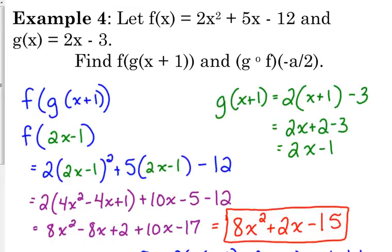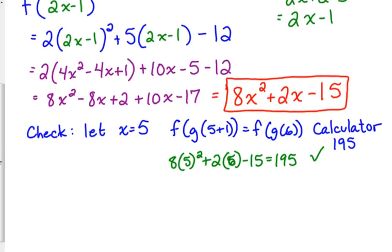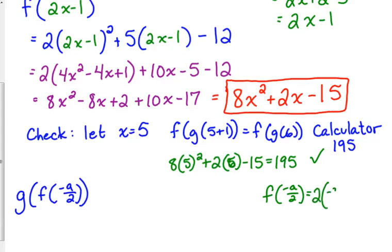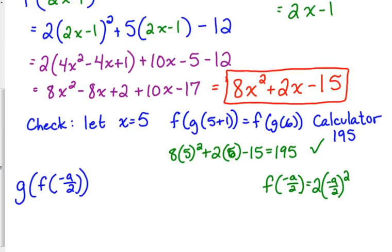Let's reverse it. Let's do g of f of negative a over 2. So again, we start with plugging negative a over 2 into our f function this time. So f of negative a over 2 is equal to... f is 2x squared plus 5x minus 12.